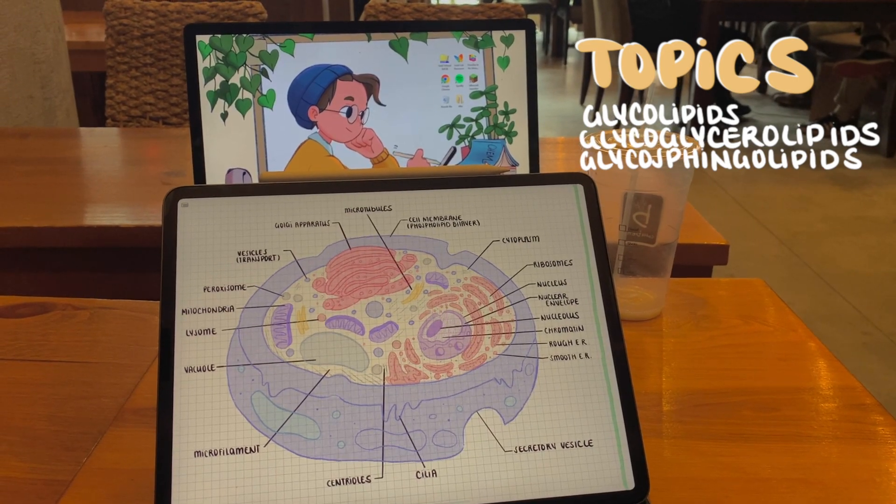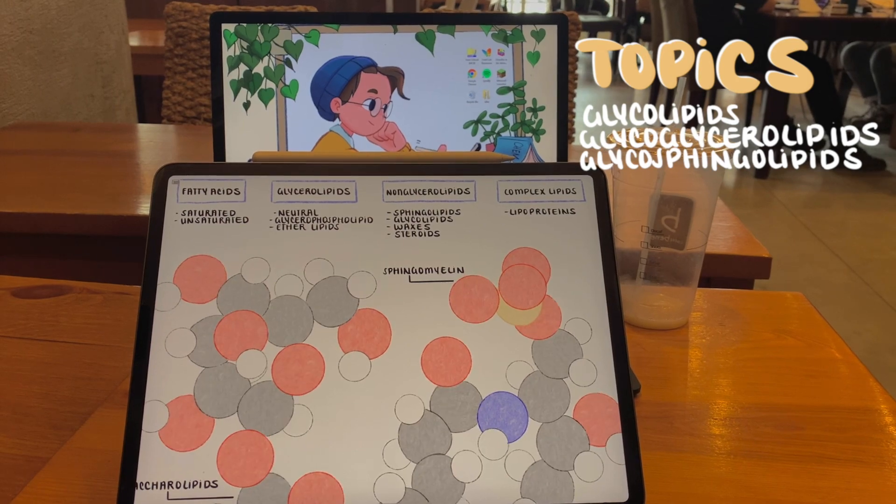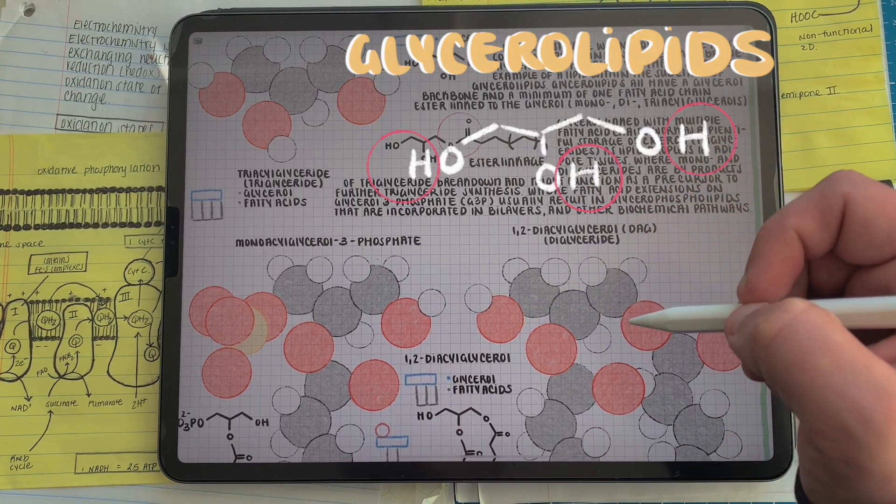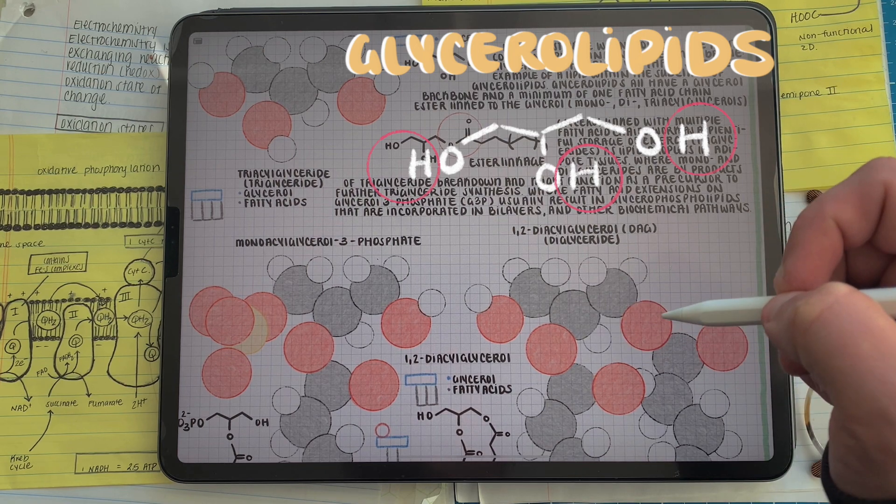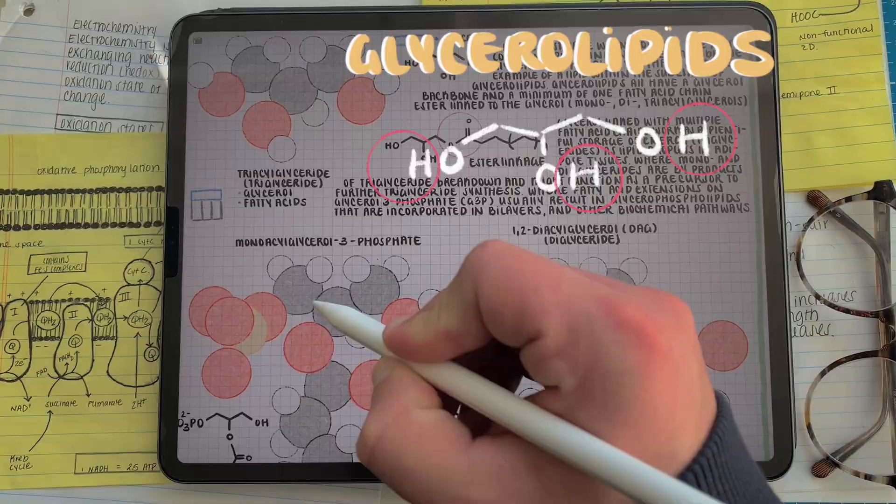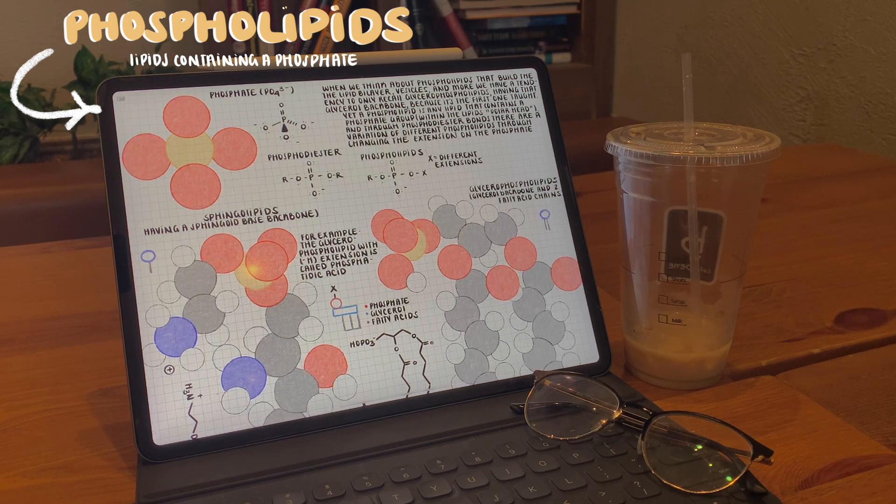Hello everyone, in the last video we went over glycerolipids and sphingolipids, focusing on the distinguishing alcohol backbones that divide those classes of lipids, and their different arrangement of extensions of those molecular backbones, while also examining phospholipids and how we can have varying head groups through a phosphodiester bond on the attached phosphate.